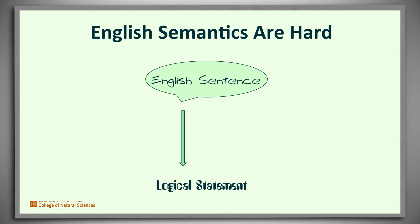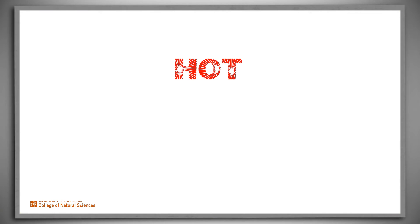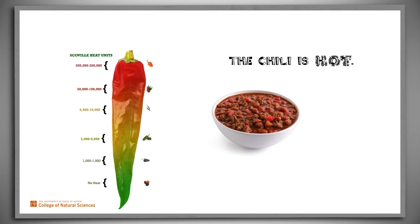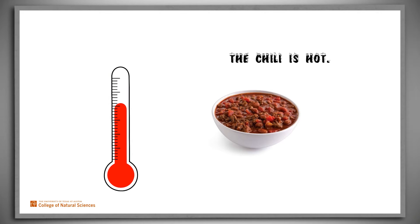Even simple words can have multiple meanings. For example, consider the word 'hot.' We could say 'the chili is hot,' meaning spicy, or 'the chili is hot,' meaning hot in temperature. In logic, we'll never use the same predicate to mean two different things.